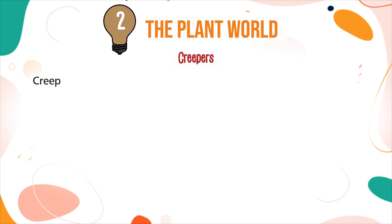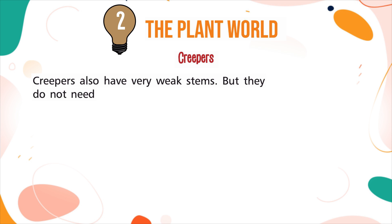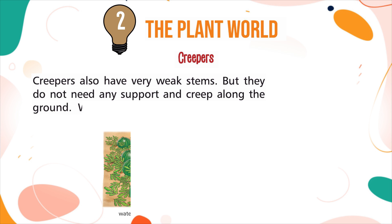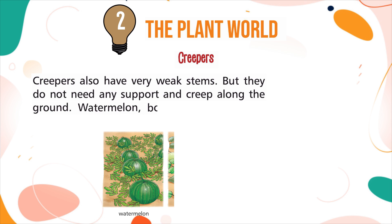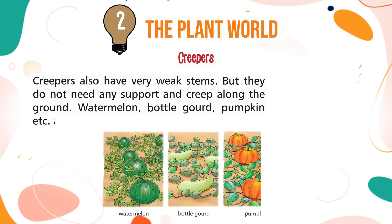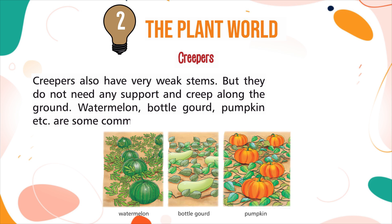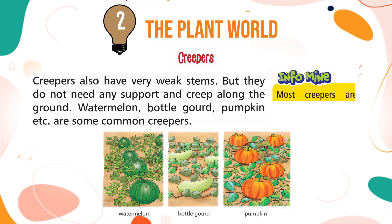Creepers also have very weak stems, but they do not need any support and creep along the ground. Watermelon, bottle gourd, pumpkin, etc. are some common creepers. Inform mind: Most creepers are flowering plants.